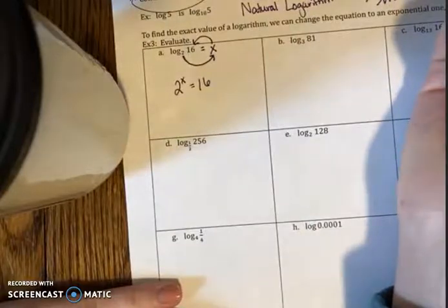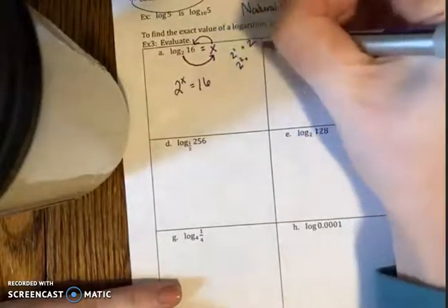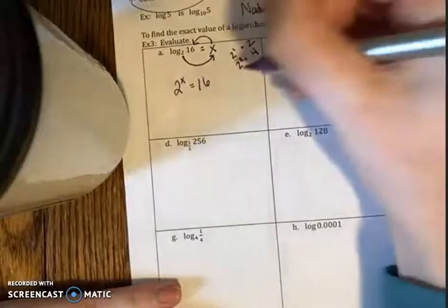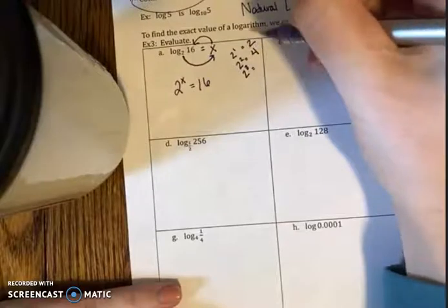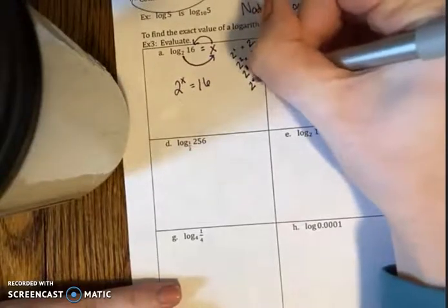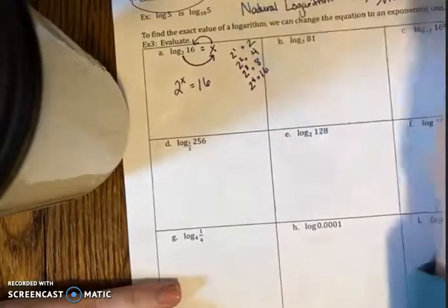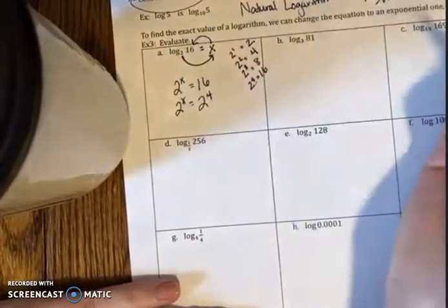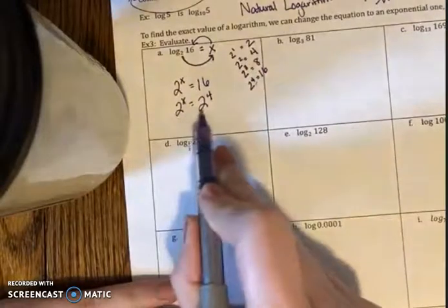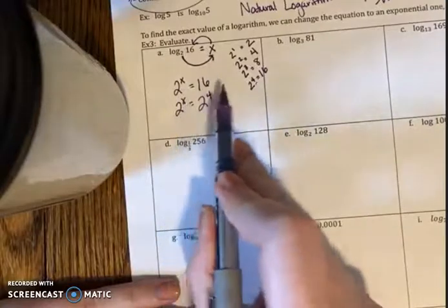Well, 2 to the first power is just 2. 2 squared is 2 times 2 which is 4. 2 cubed is 2 times 2 times 2, so that's 8. 2 to the fourth power is 2 times 2 times 2 times 2 or 4 times 4 which is 16. That's what I wanted. So I'm going to rewrite this as 2^x equals 16 was equivalent to 2 to the fourth power. Once we have the same base here, we can look at the exponent. So I know that x equals 4.